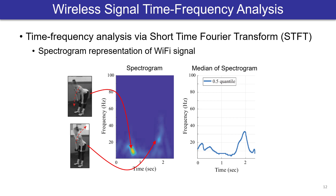Here is an example spectrogram of a person performing a deadlift. We can see that the signal contains higher frequencies during the second half of the exercise, since the person stands up faster than they bend down.